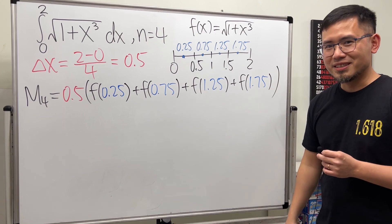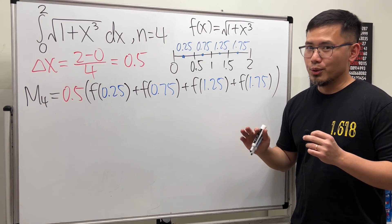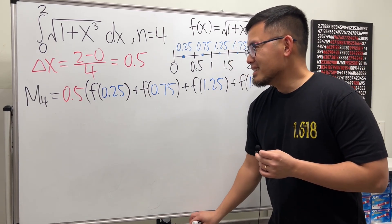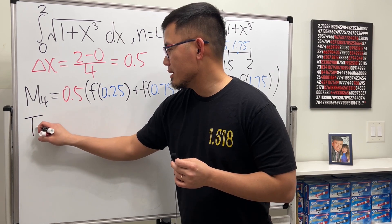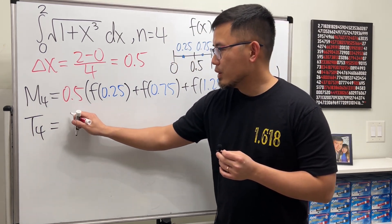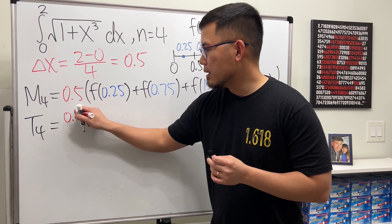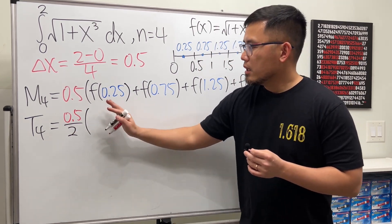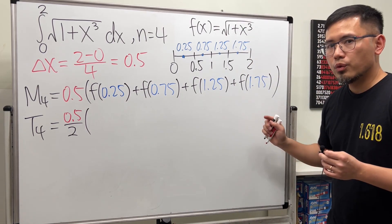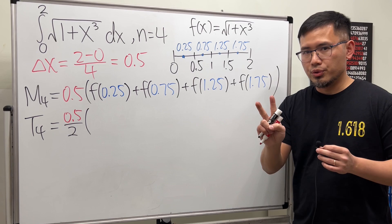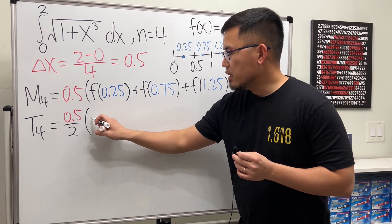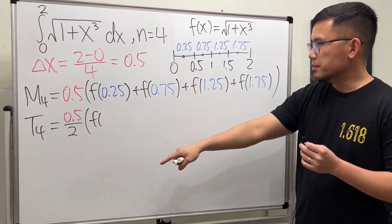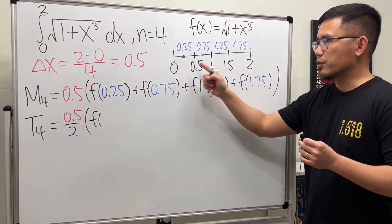Of course this is just the setup, but if you have this on a test you'll get most of the credit. Now let's do the trapezoidal rule T4. First we have delta x divided by 2, and then the first and last coefficients are 1, while anything in between has a coefficient of 2.